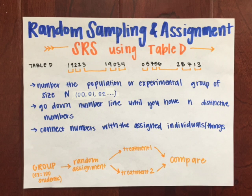This is how to use Table D. Give each individual in the population or experimental group a number. They must all be the same number of digits and must all be unique. Determine the sample size that you want and assign only that number of labels. Read consecutive digits off of Table D going across a row. Ignore any digits that you didn't assign to someone and ignore repeats. Stop when you've selected n number of labels.